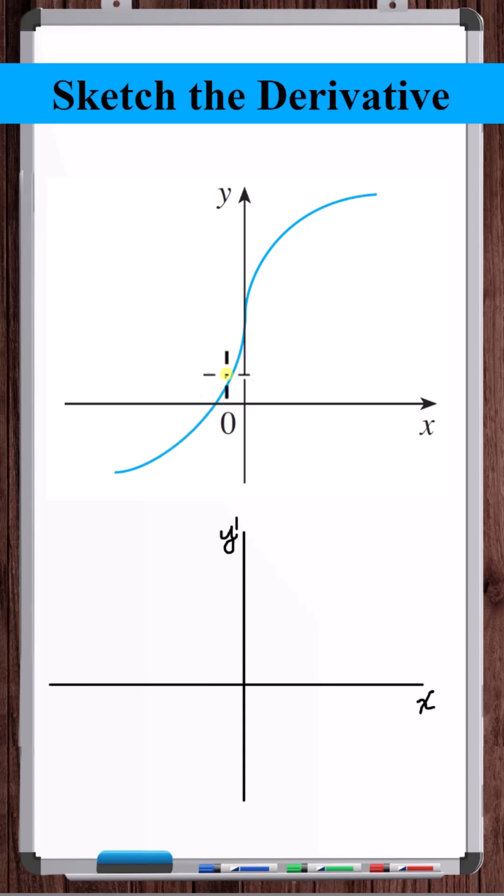It looks like there's no point of zero slope here, but there looks to be a vertical tangent at x is equal to zero, which means that the y prime axis is going to be a vertical asymptote.